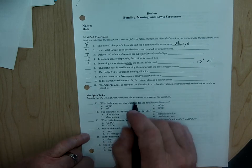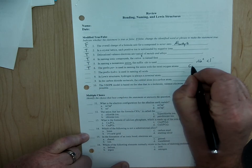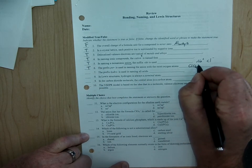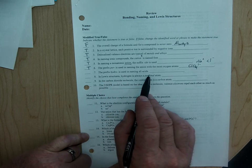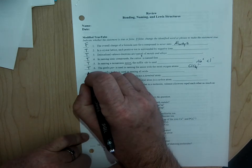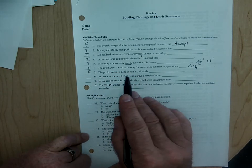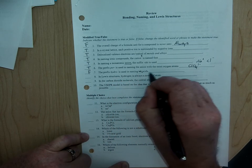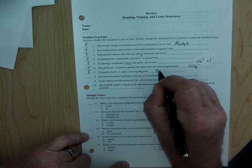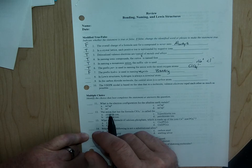Prefix PER is used in naming the anion with the most oxygen atoms. Also true. For example, ClO4 is perchlorate and it's the one with the most oxygen atoms. The prefix hydro is used in naming all acids. That is not true. That's false. Instead of the prefix hydro is used not for naming all acids, but it's used for naming binary acids or acids that only contain hydrogen and one other element.